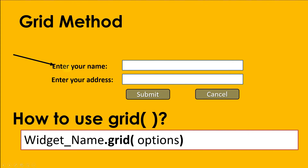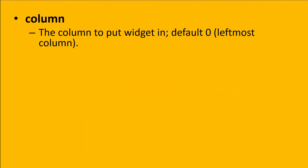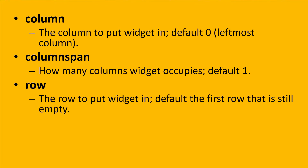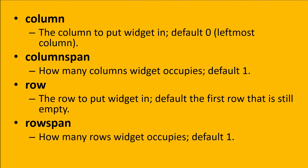When using a grid, we need the widget name - for example l1 for a label - then l1.grid() with the options inside the parentheses. The options include: column - where you put the widget, default is zero (leftmost column); columnspan - how many columns the widget occupies, default is one; row - the row where you place the widget, default is zero; and rowspan - how many rows the widget occupies.